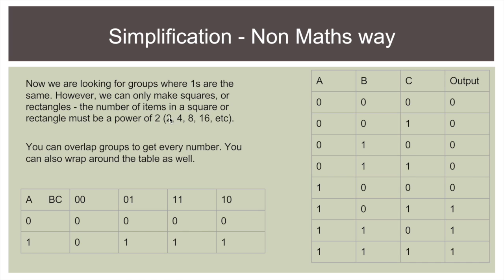Because 2 times 1 is 2, 2 times 2 is 4. Sorry, 2 to the power of 1 is 2, 2 to the power of 2 is 4, 2 to the power of 3 is 8, 2 to the power of 4 is 16 and so on.